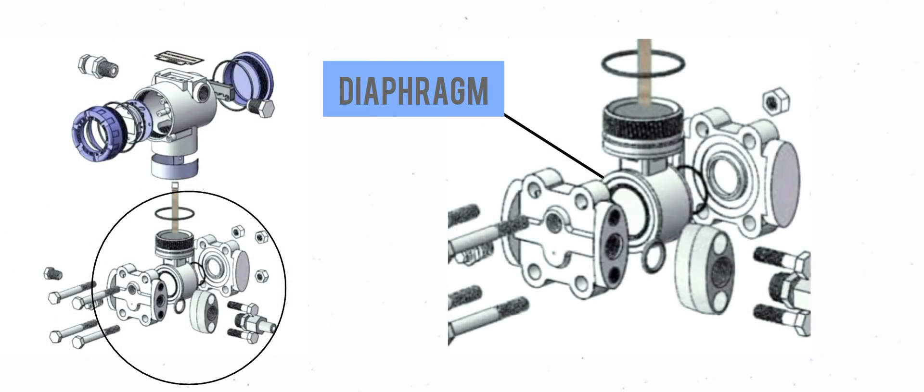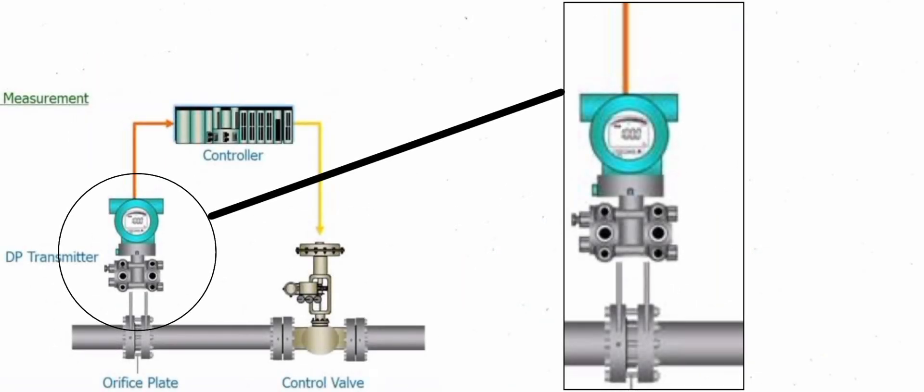The elements in a DP transmitter will have sealed diaphragms and one of several ways to convert the pressure applied onto the diaphragms into an electrical signal. Sensors such as differential capacitance, vibrating wire, or strain gauges are used to produce the electrical signal that will be sent to the electronics system.